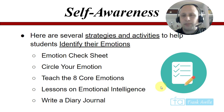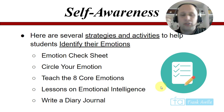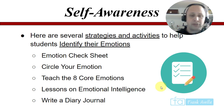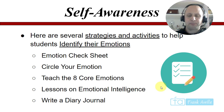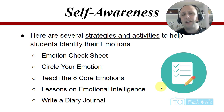Here are several strategies and activities to help students identify their emotions. One is an emotion check sheet — you can have students circle their emotion if they're angry or sad. You can teach the eight core emotions, have lessons on emotional intelligence, and have students write in a diary journal. Journaling is one of the most therapeutic activities you can have students do in the classroom, and there's wonderful research supporting it. In their journals, students are really writing to you.